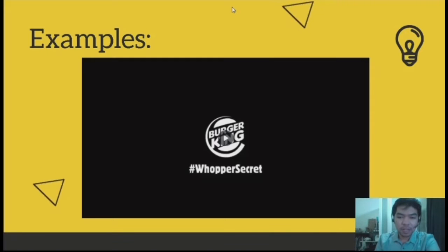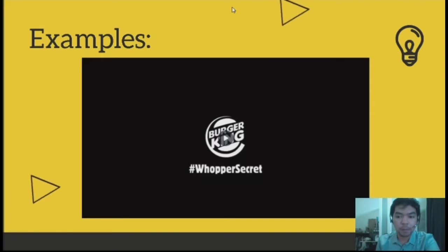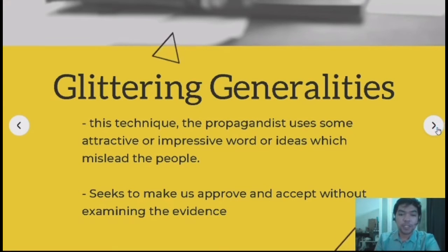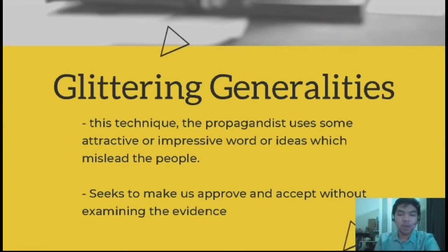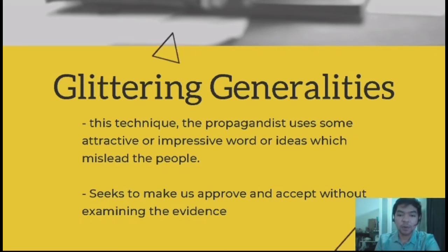That is name calling. Let's move on to the second technique in propaganda: glittering generalities. Glittering generalities is a technique wherein the propagandist uses some attractive or impressive words or ideas which mislead the people. It also seeks to make us approve and accept without examining the evidence.